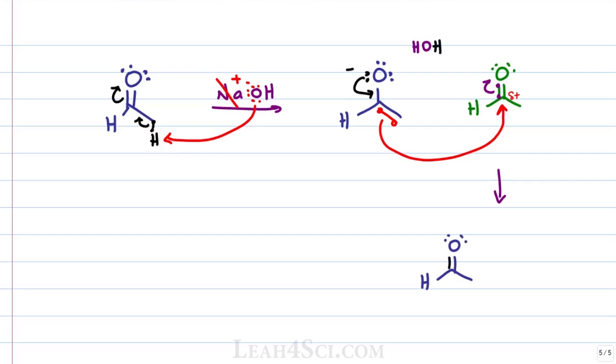Oxygen now has two lone pairs and the carbonyl is reformed. We have a new bond that forms from the alpha carbon to the carbonyl carbon of the green molecule and so we'll show the green molecule as two carbons attached to the alpha carbon. The green molecule now has just a single bond to oxygen with an extra lone pair and a negative charge.